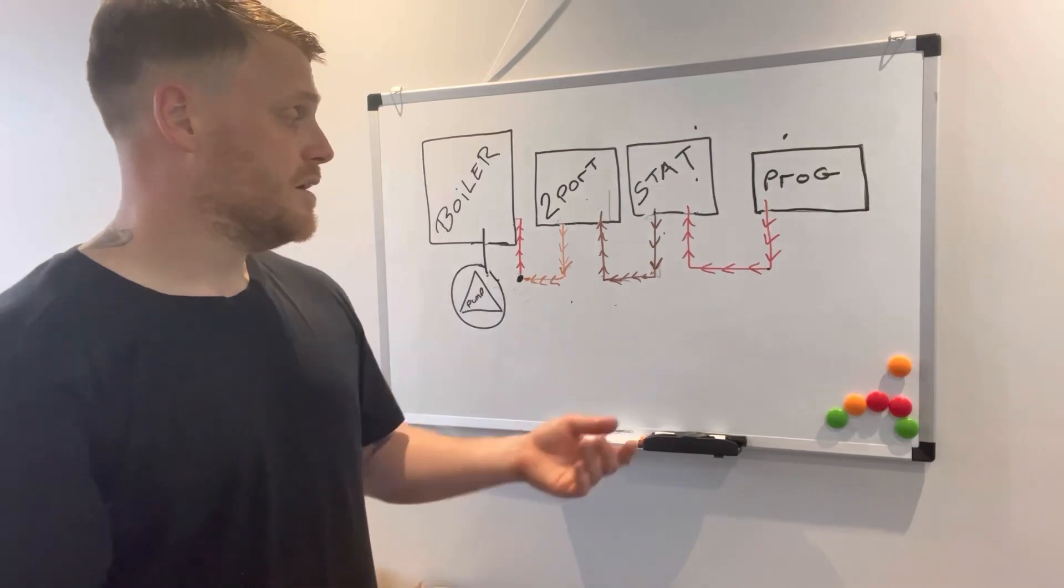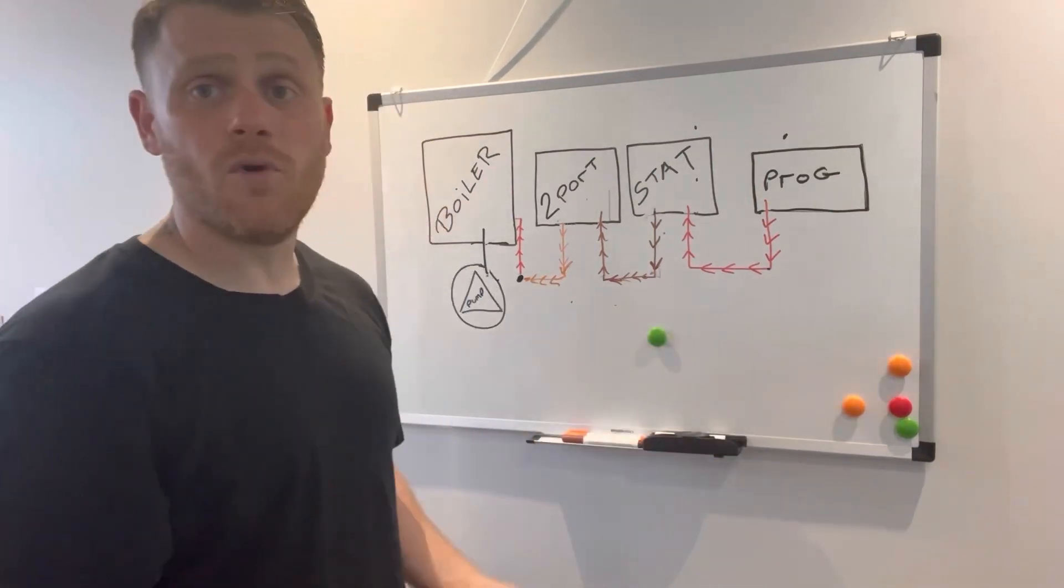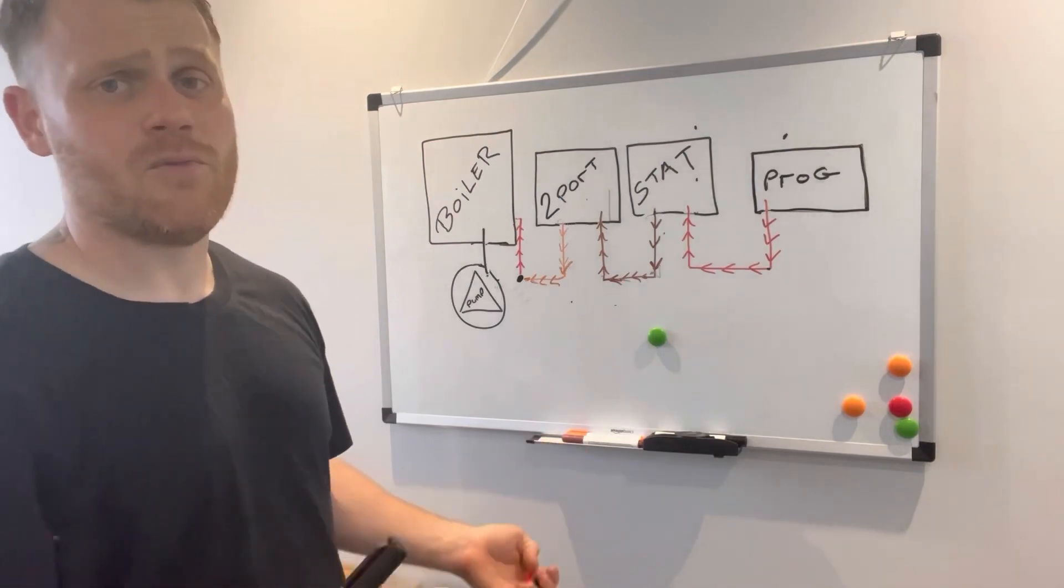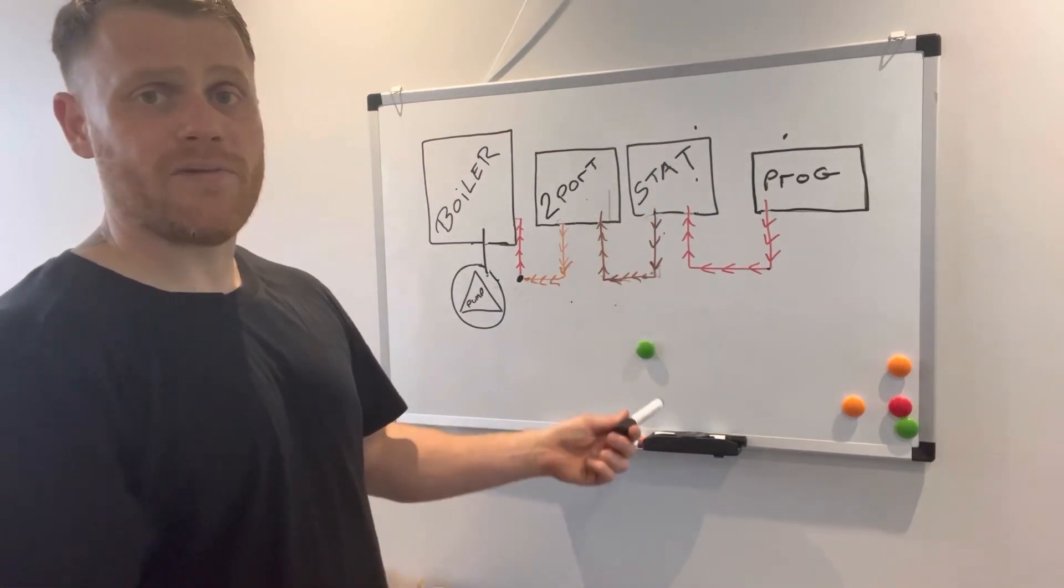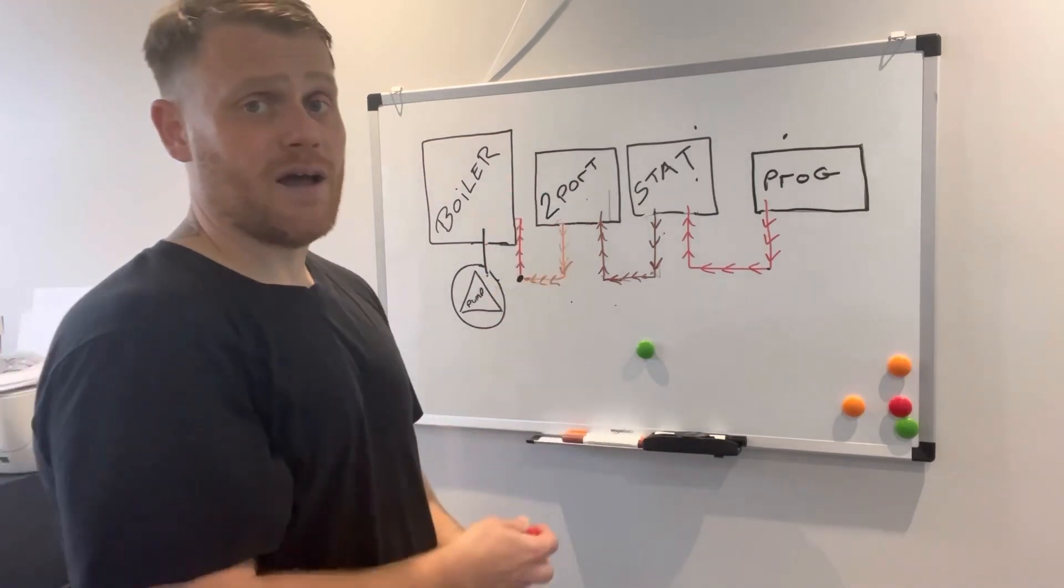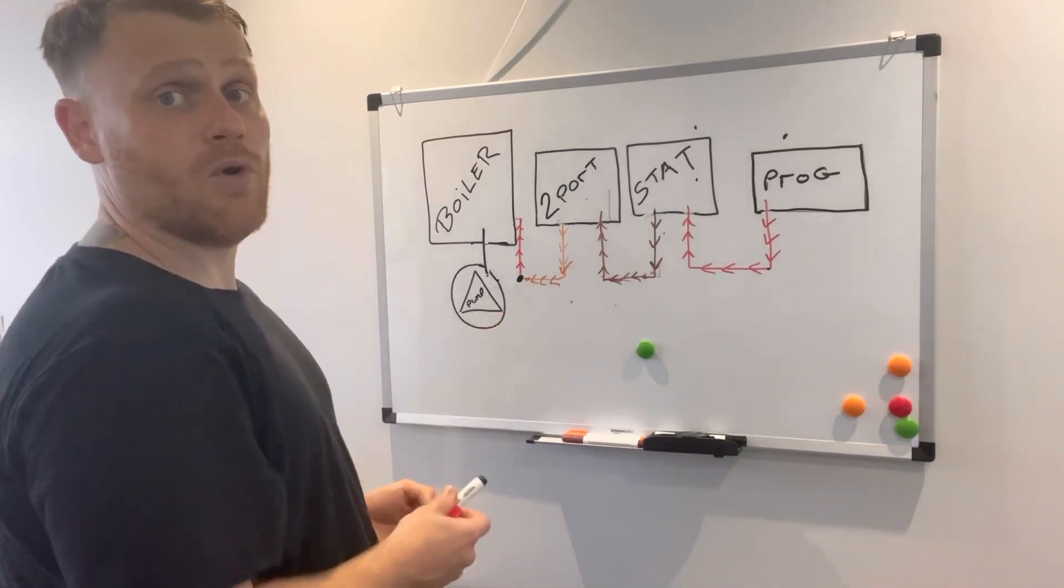It comes in really handy for fault finding as well. So let's just say there's a fault on this one, we've got no hot water, no heating, whichever. What you could do is find an earth point, put one of your probes on there, and we're just going to use our other one to track the wiring. I always go for the brown wire.